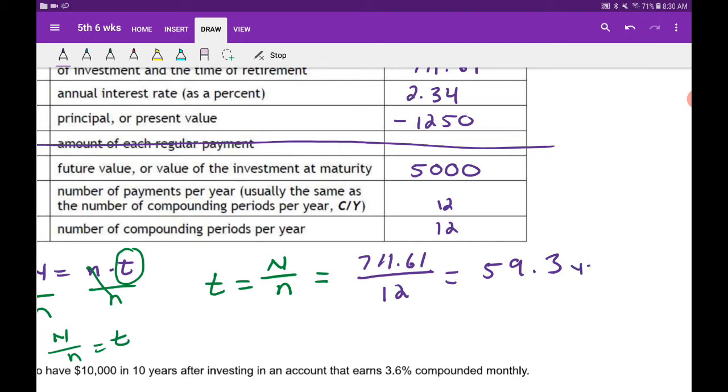This is t, so this is years. That's about how long it's going to take. Now remember, if you're investing into a mutual fund or CD, usually those things are locked in. You have a grace period of when you can pull that money out. So is 59.3 like a reasonable answer?